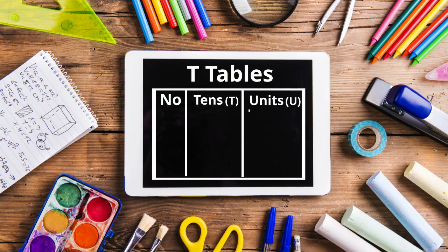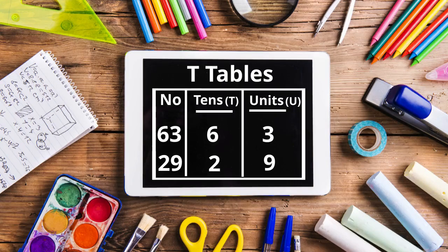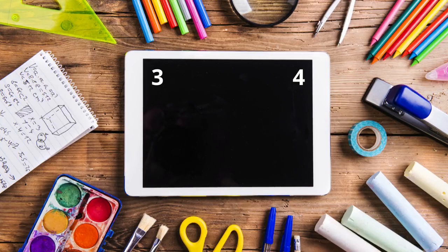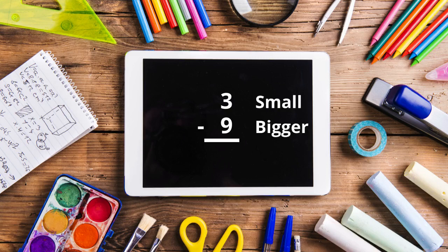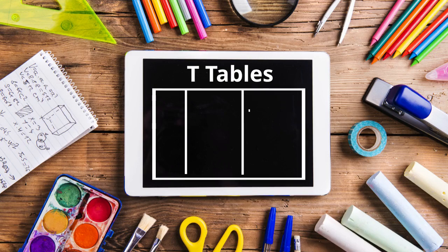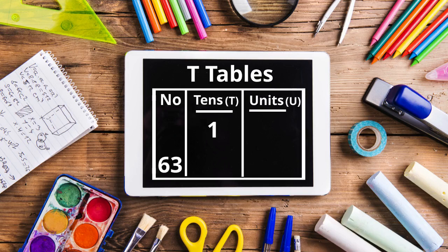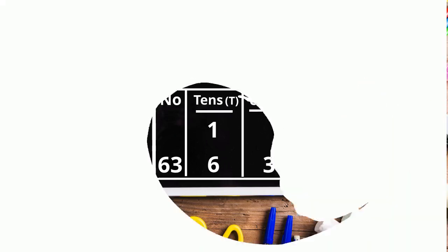Let's subtract 29 from 63 in the T-table for units and tens. T column U, where U represents units and T represents tens: 6 column 3 — 3 units and 6 tens in 63, minus 2 column 9 — 9 units and 2 tens in 29. In the units column we have 3, from which 9 has to be subtracted, but since 9 is bigger than 3 we cannot do it. So first we will carry 1 from the tens column of 63, that is 6, and place it with 3 as a 10.